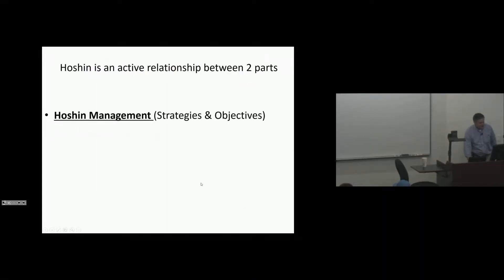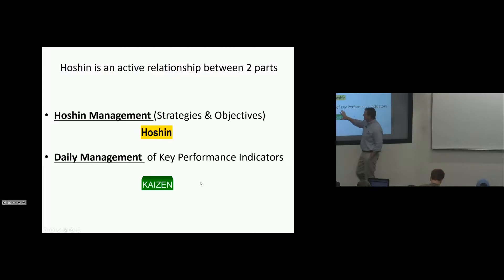Hoshin is an active relationship between two parts. It's the strategies and objectives and it is the daily management of key performance indicators. So there's some redundancy in what we talked about, continuous improvement in SQDCM.